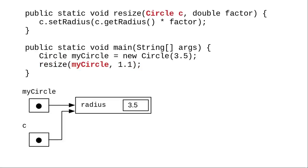When we pass myCircle to the method, the reference to myCircle is copied into parameter C. Because both C and myCircle refer to the same object, when we update the radius of C and exit the resize method, myCircle will have its property updated.